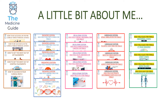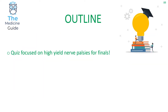It involves abdominal x-ray, CT head imaging, chest x-rays, nerve palsies, and rheumatological and orthopaedic images. Today's video is going to be a quiz focusing on the high yield nerve palsies that present in finals, so as long as you've got your pen and paper at the ready, you're good to go. Let's begin.